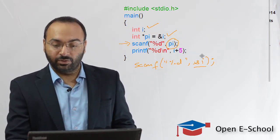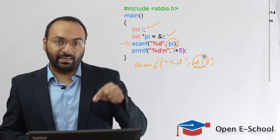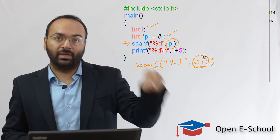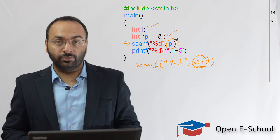Ampersand i gives you the address of the variable i. So the scanf statement will store the data entered from the keyboard at the address of that variable. Now, what does pi give you? Pi also gives you the address of i.